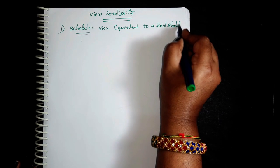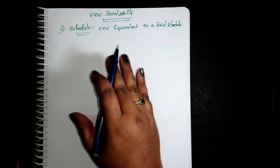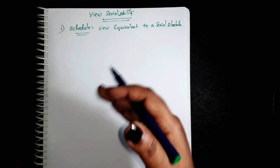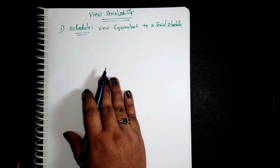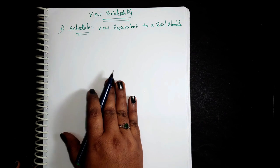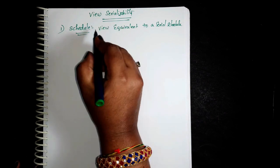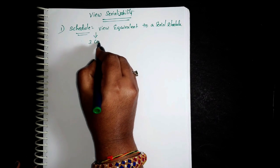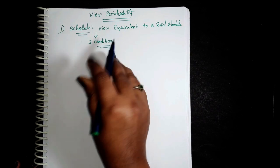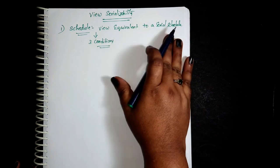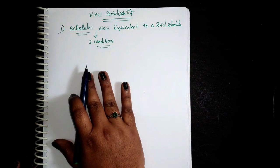We already discussed conflict serializable schedules — when a conflict occurs, we discussed three cases: accessing the same data item, two different transactions, and at least one must be a write operation. Similarly, in View Serializability, we discuss three conditions for when a schedule can be view equivalent to a serial schedule.